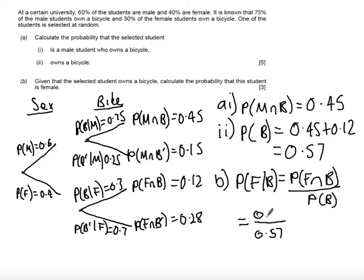So this is: probability of B is 0.57 and probability of F intersect B is 0.12. If you work through this and simplify it, you'll get that you can cancel it down, so we get 4 over 19.